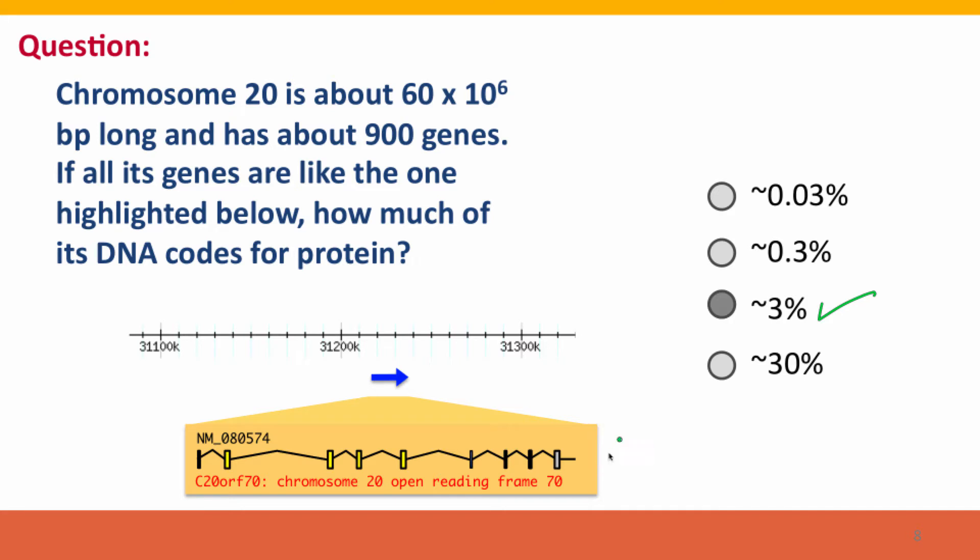And just a ballpark estimate, I'd say about 10% of the line is boxes, and the rest is introns.